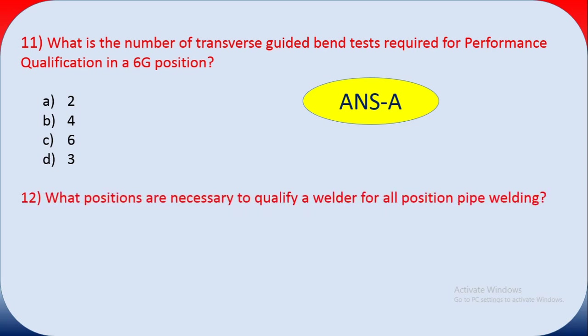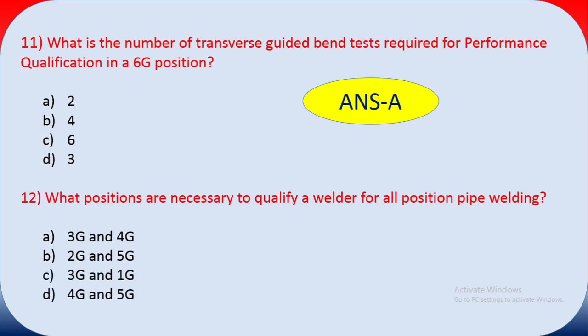Question twelve: what positions are necessary to qualify a welder for all-position pipe welding? Options are: A: 1G, B: 3G and 4G, C: 2G and 5G, D: 4G and 5G. For all-position pipe welding, the answer is C — 2G and 5G. If qualified in 2G and 5G, the welder is qualified for all positions.